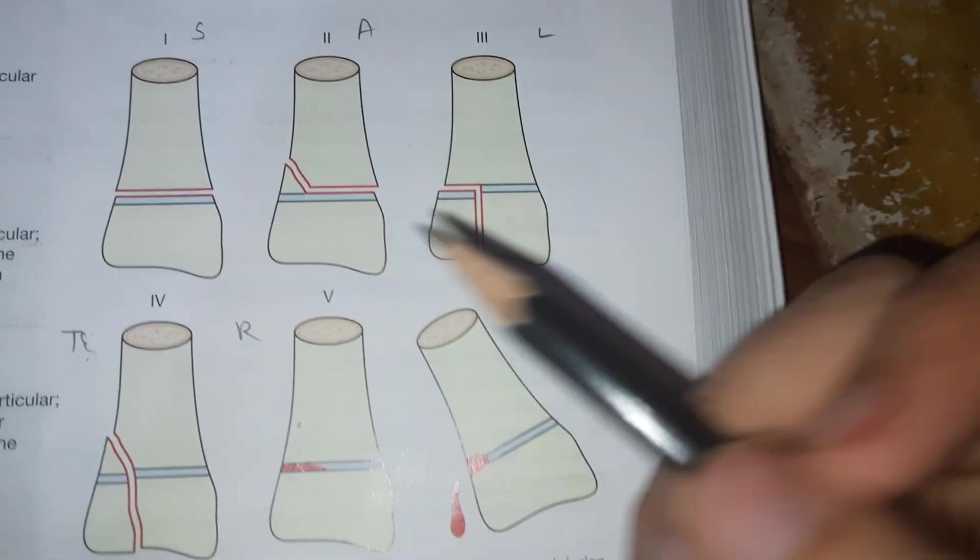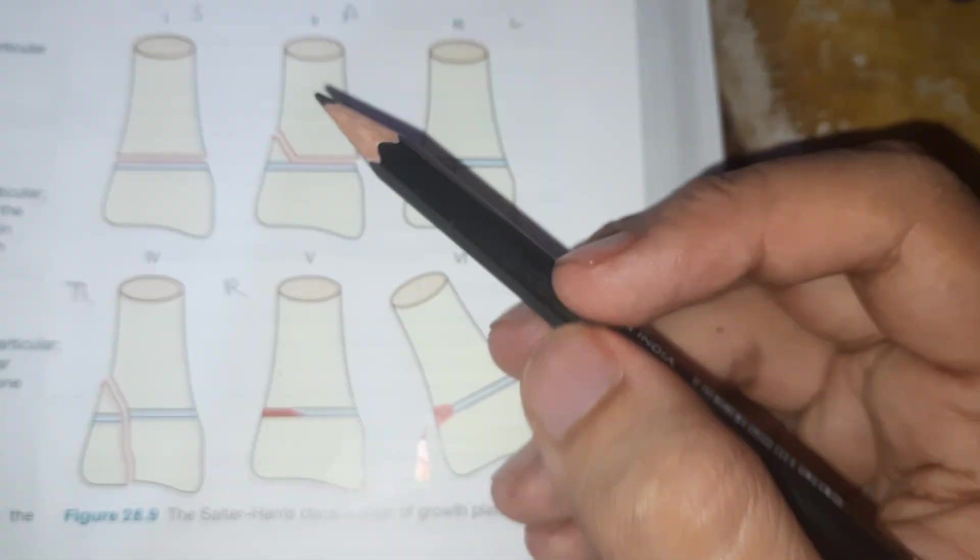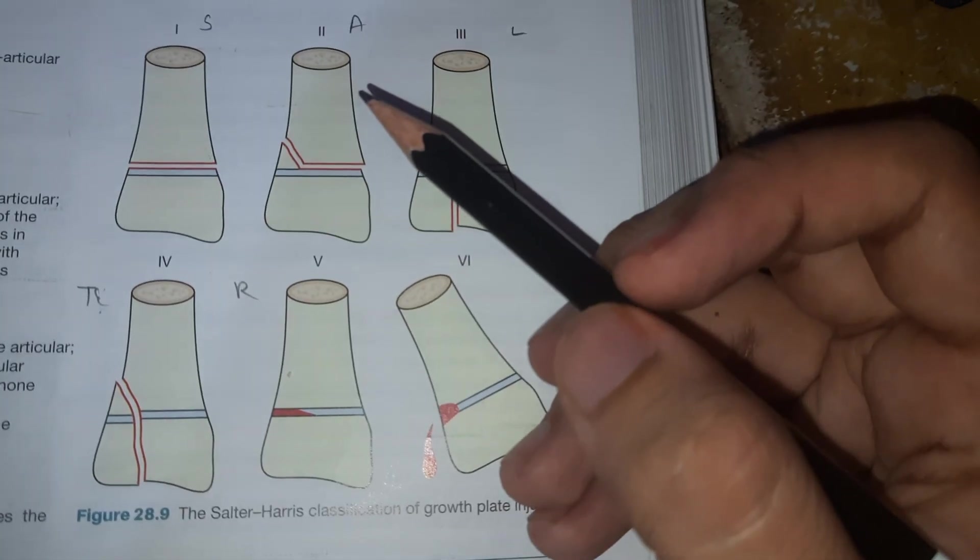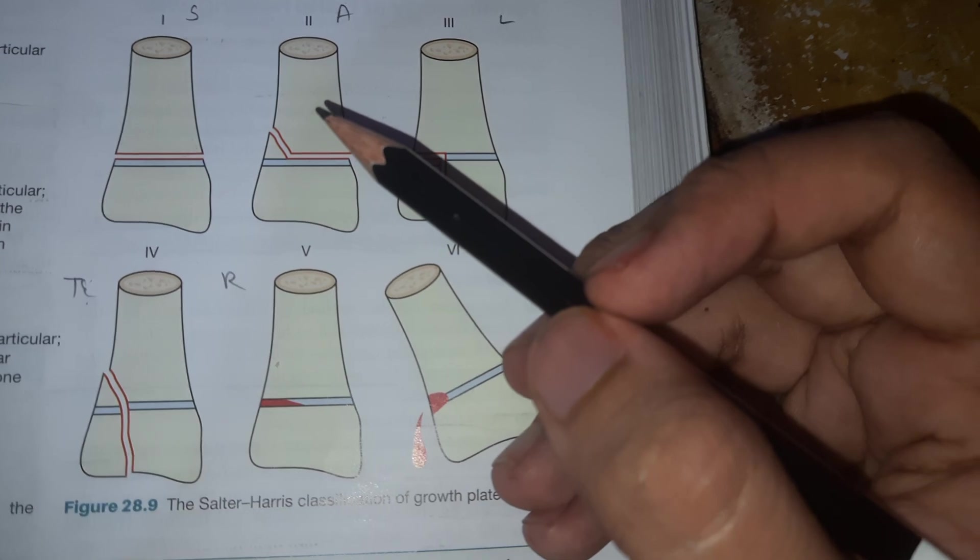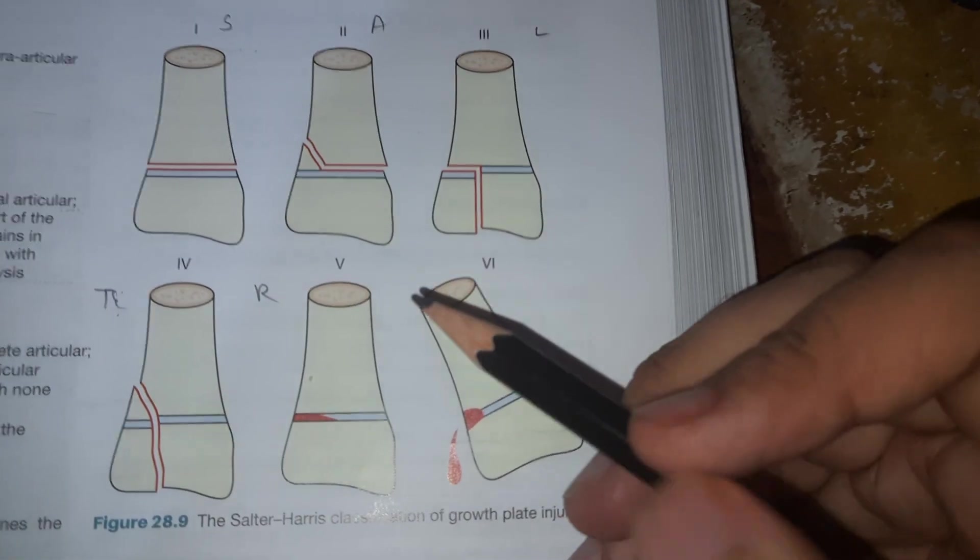Hello everyone. Today I will be talking about Salter-Harris classification of physeal injury, that is growth plate injury. Salter-Harris has divided the physeal injury into five types: one, two, three, four, five.